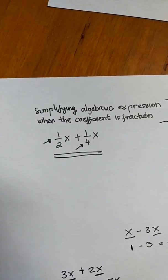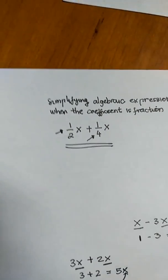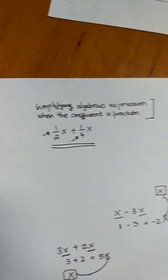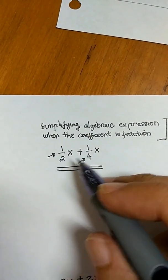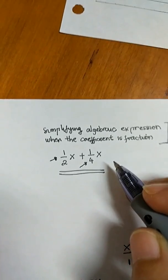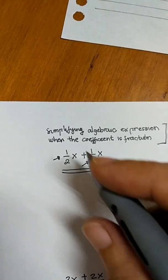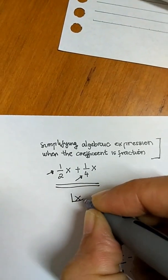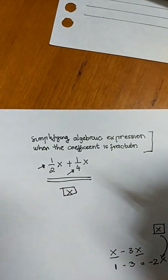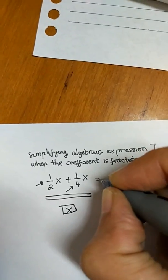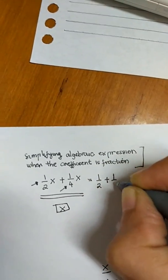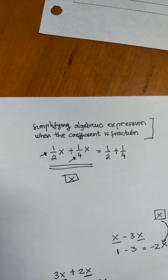Now we go back to our topic: simplifying algebraic expressions when the coefficient is a fraction. Both terms are like terms — both use x. So I keep the x in the safety box, and the remaining expression becomes one half plus one quarter.